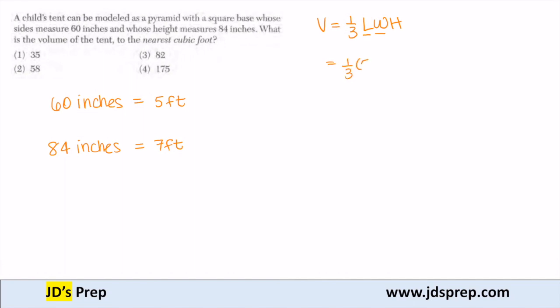So that's 1 third, 5 times 5. The height, we just converted to 7 feet. And when we plug that into our calculators, we can approximate the volume of the tent to be 58 cubic feet, which is option number 2.